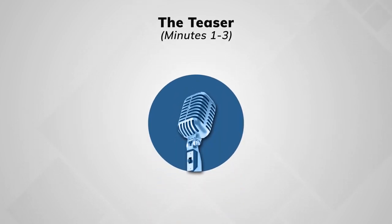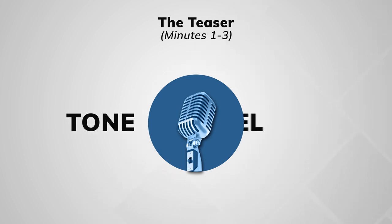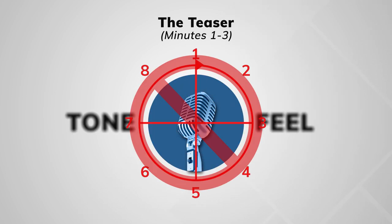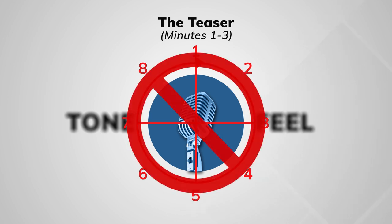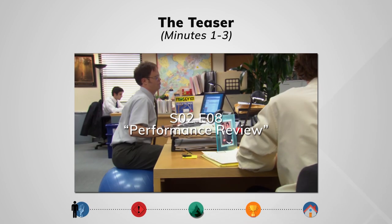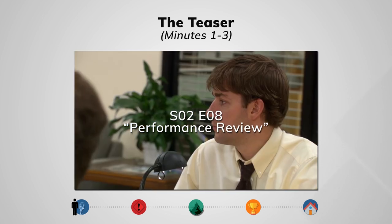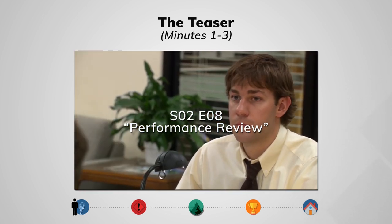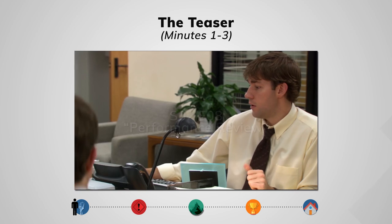Charney starts off talking about the teaser. The teaser is an opening joke, usually one to three minutes long, that's used to bring viewers into this episode and give an idea of the tone and feel of the show. This doesn't really fit into the story circle as it is usually a standalone joke of some kind. In Season 2, Episode 8 of The Office, called Performance Review, we begin with an opening teaser where Dwight annoys Jim with his fitness orb and Jim pops it.